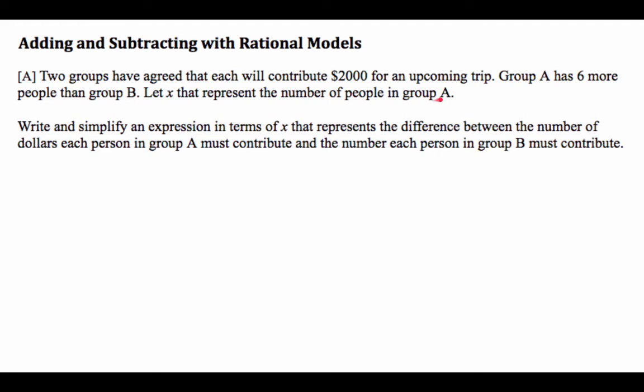If you let x be equal to the number of people in A, then there must be less people by 6. So the number of people in group B is x minus 6. Now, let's think about this a little bit.